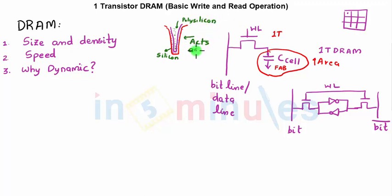Though the capacitor might seem to take a lot of area, its surface area is actually very small. More importantly, the way they fabricate it today in a one-transistor DRAM, they fabricate the capacitor and then put the transistor on top of it, which is very small, so the area is optimized. So the challenge in one-transistor DRAM is the fabrication of its capacitor, which these days is done using trench capacitors.